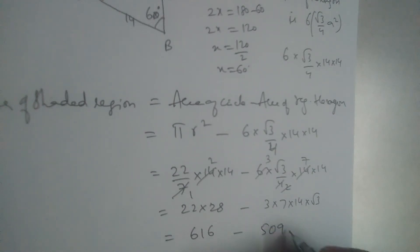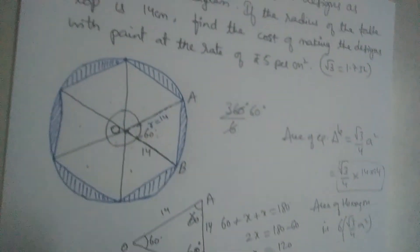So if you subtract this, you will get 106.79 cm². Now this is the area of shaded region.